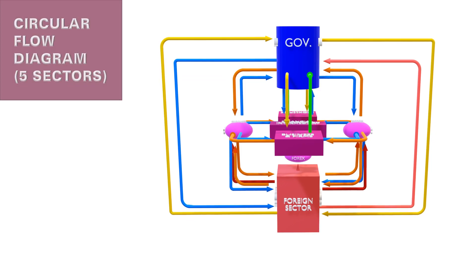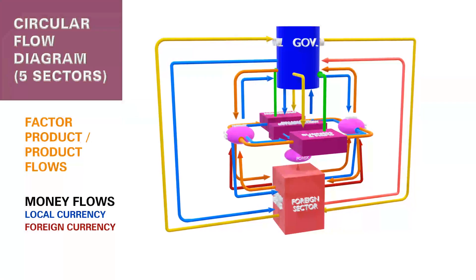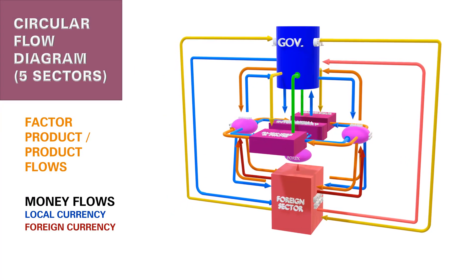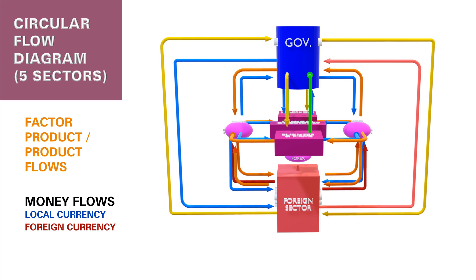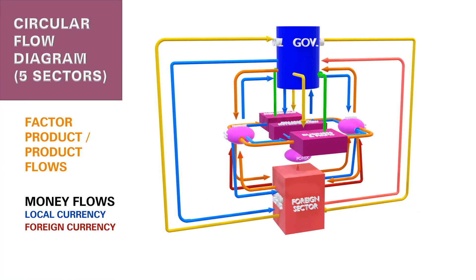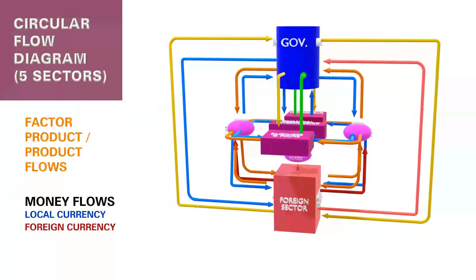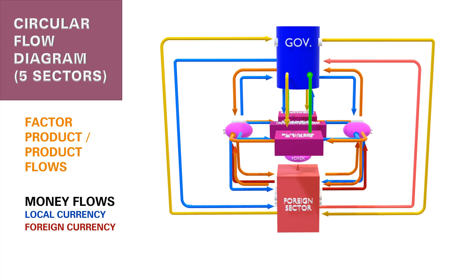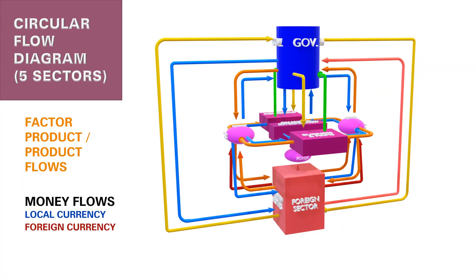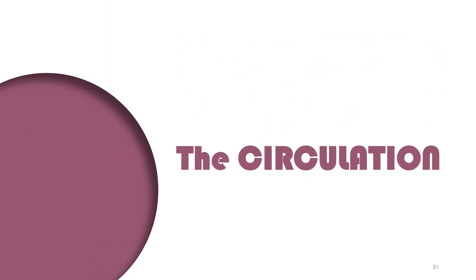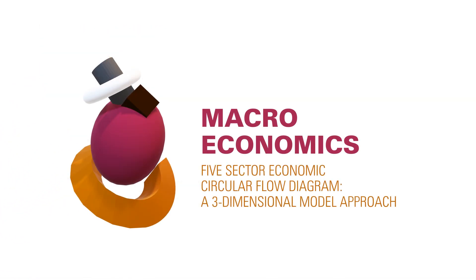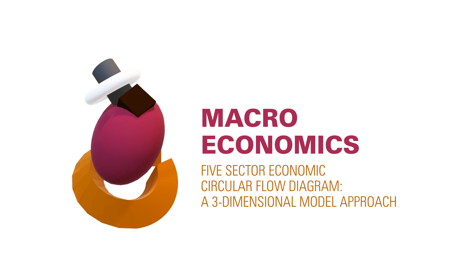And there we have it — the five-sector economic circular flow diagram. We can see how factors of production and products flow, as well as how local currency, foreign currency, and money in general flows through the system — making it a very sustainable system in the long run. That concludes both sections of the lesson. Thank you for studying with me.